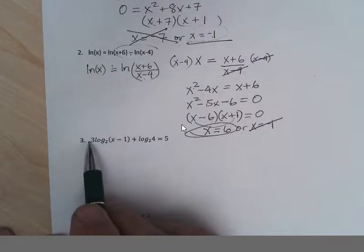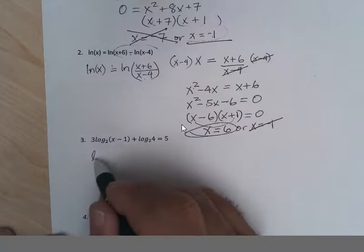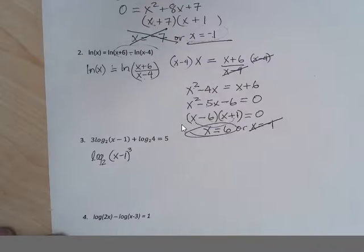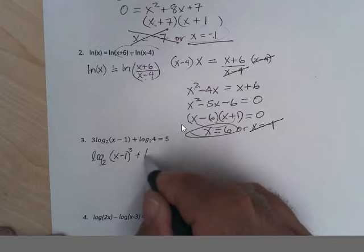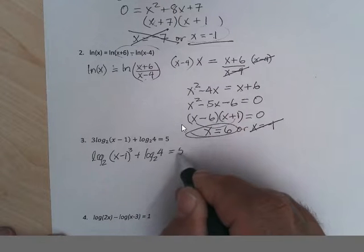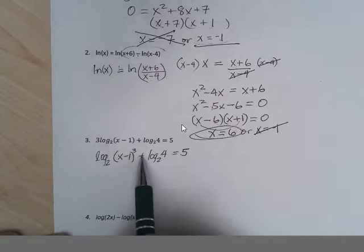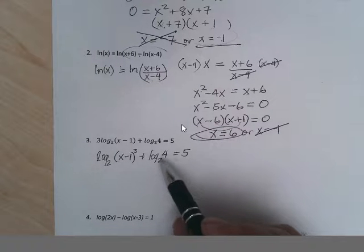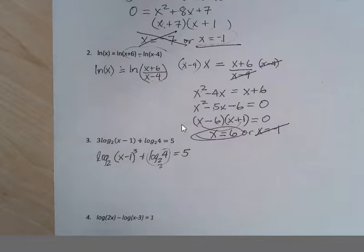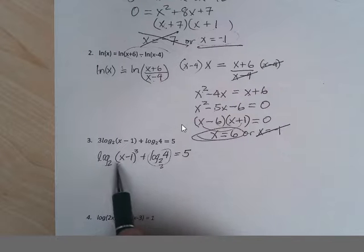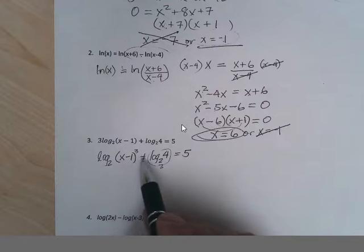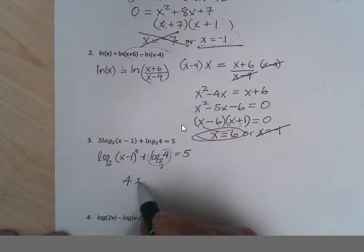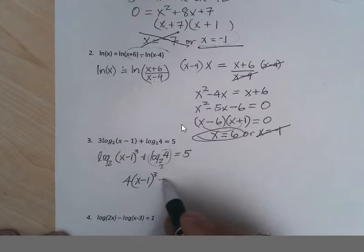We got the sum but we have a number in front, so we take it up as a power. So we have log base 2 of x minus 1 to the third plus log base 2 of 4 equals 5. When it's plus, you multiply these. Log to what power to take 2 to get 4, this is just 2.